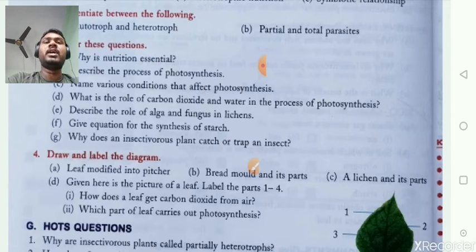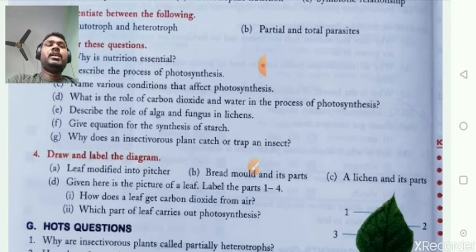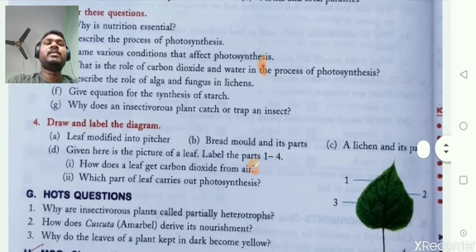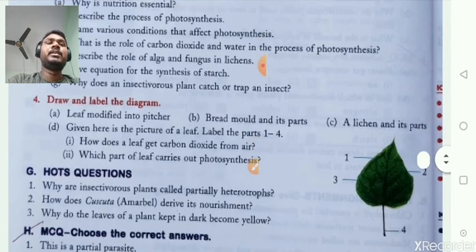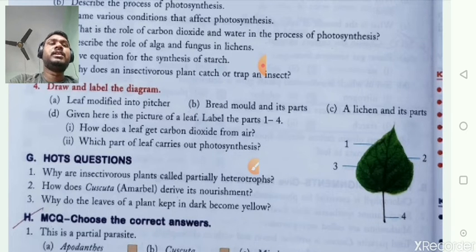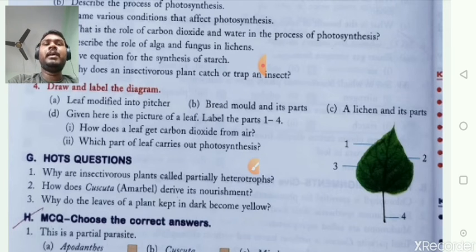Draw and label the diagram: leaf modified into pitcher, bread mould and its parts. Then give the picture of a leaf and label parts 1 to 4. The first part is margin, second is lamina, and third is petiole.